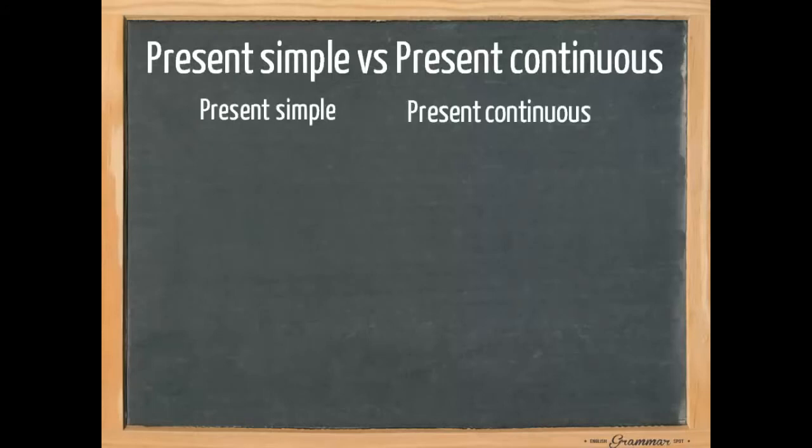First we're going to have a look at how to form a present simple and how to form a present continuous. For the present simple we use the infinitive form of the verb. For the present continuous we need the auxiliary verb to be, the infinitive form of the verb, and ing.